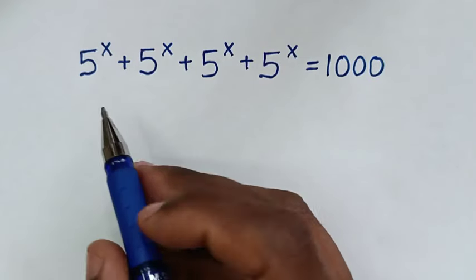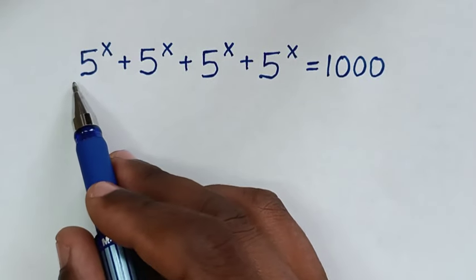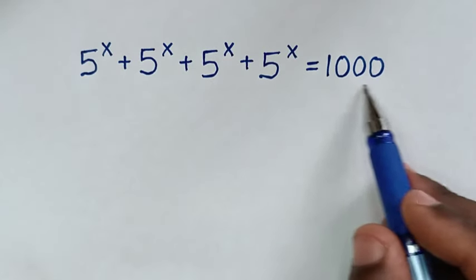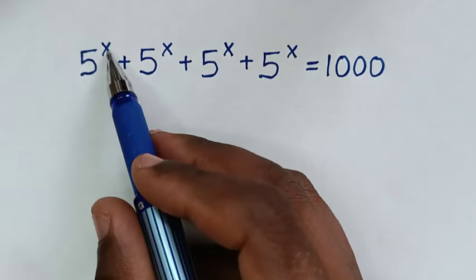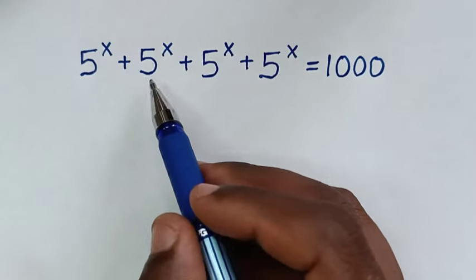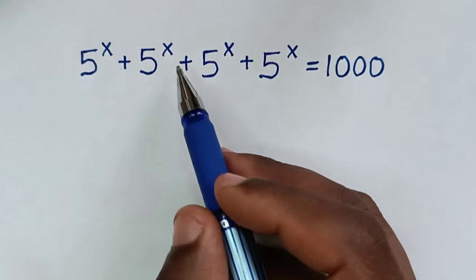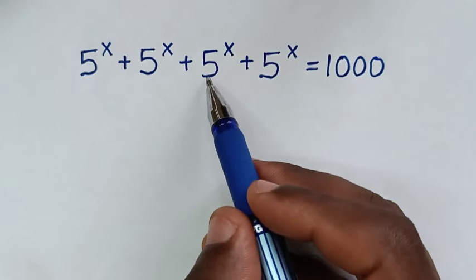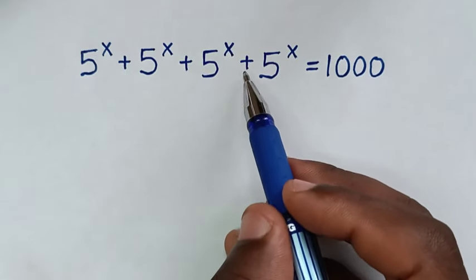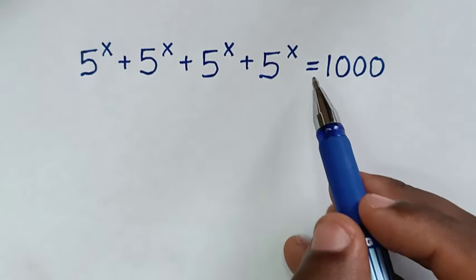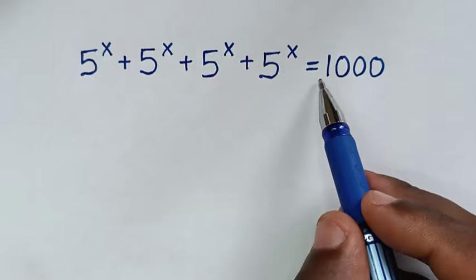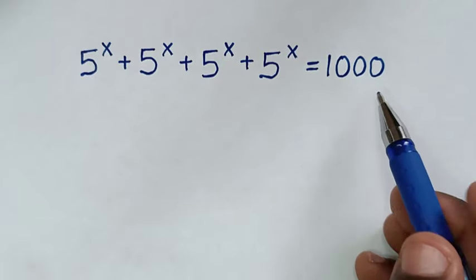Hello, you are welcome to solve this math problem which is 5 power of x plus 5 power of x plus 5 power of x plus 5 power of x is equal to 1000.